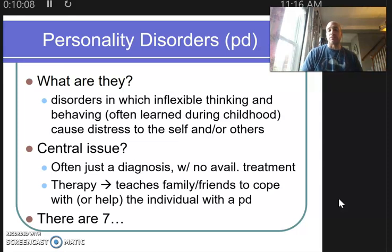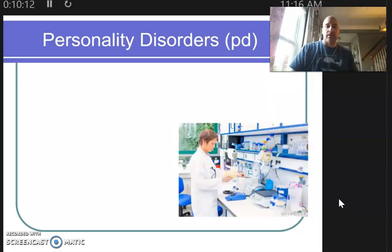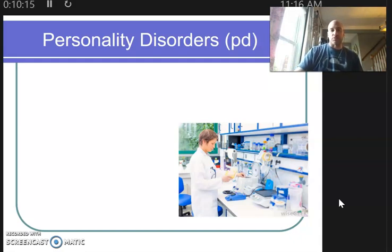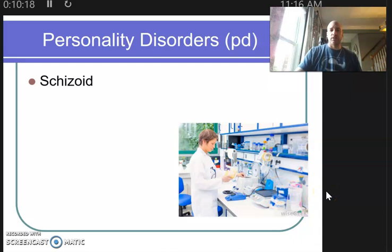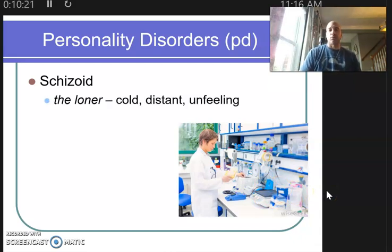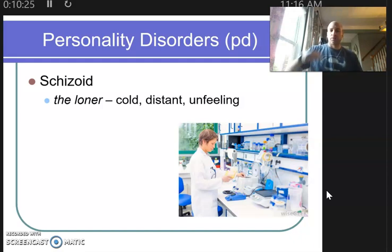It's also important to remember that there are seven of these. Our first personality disorder is called schizoid. I'll try to give each one a nickname to help you remember what they're about. A schizoid can be nicknamed a loner — they're very cold, distant, unfeeling personalities.